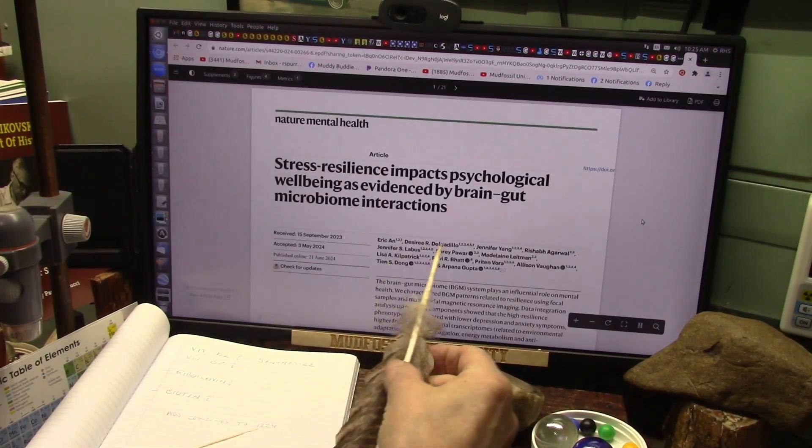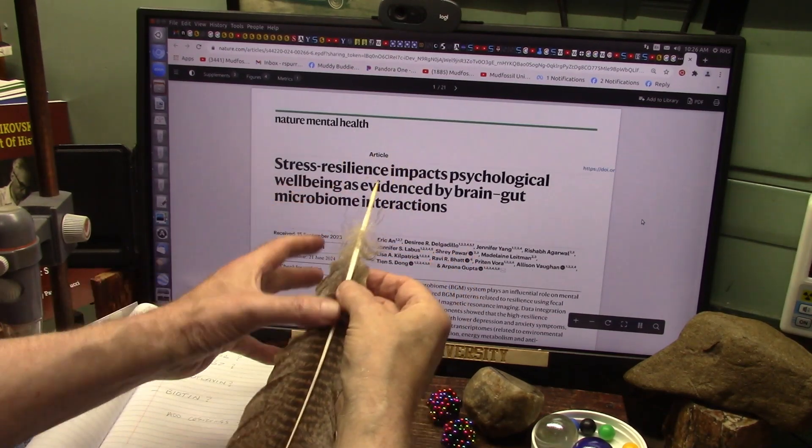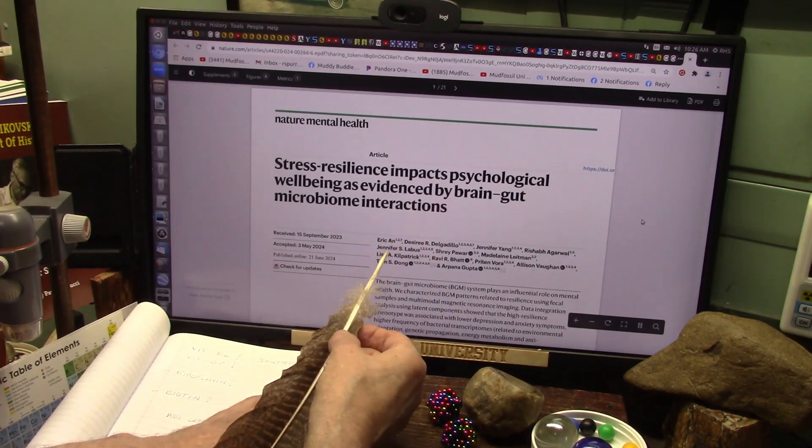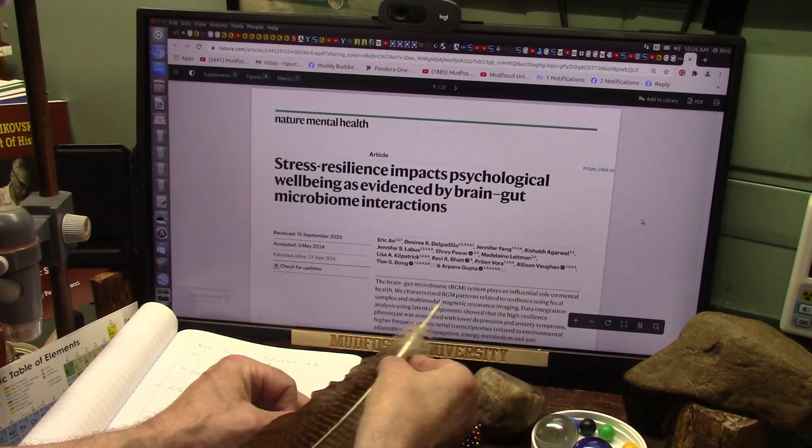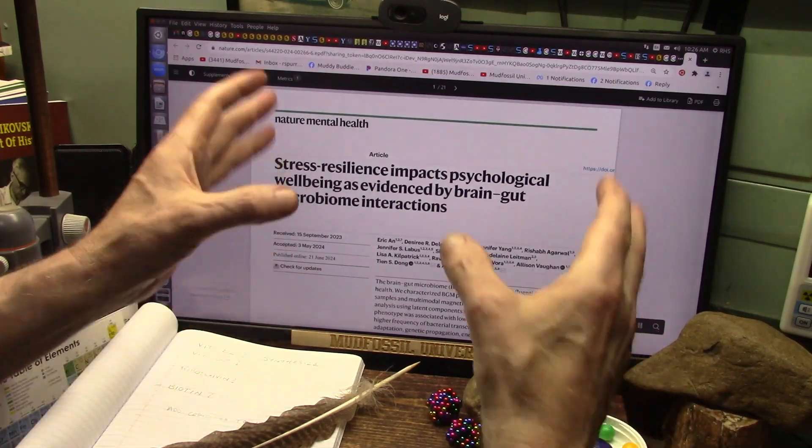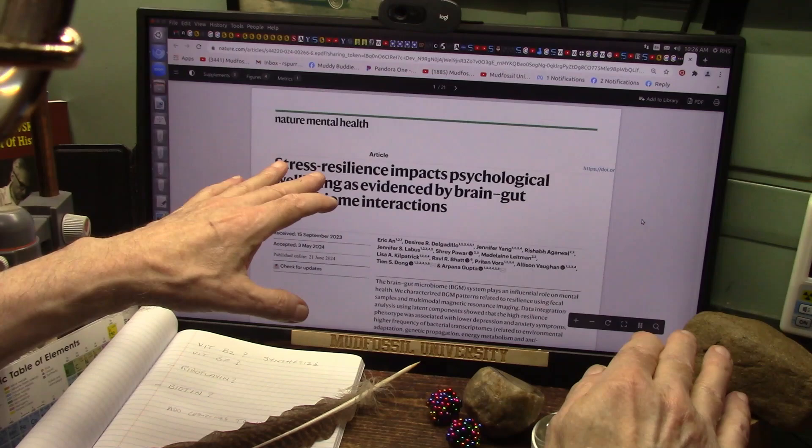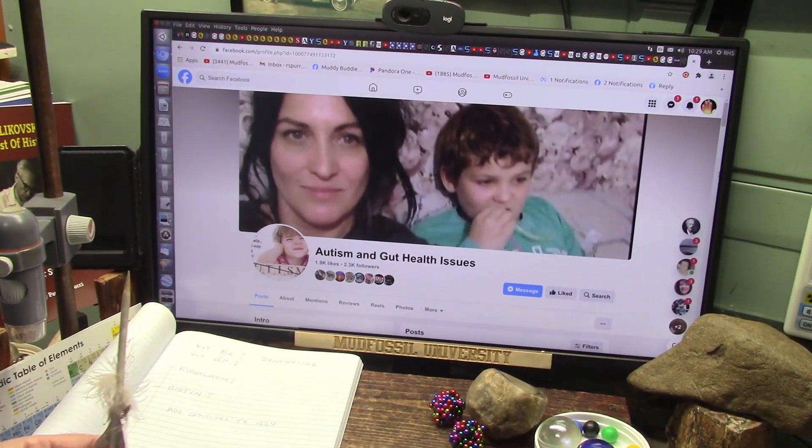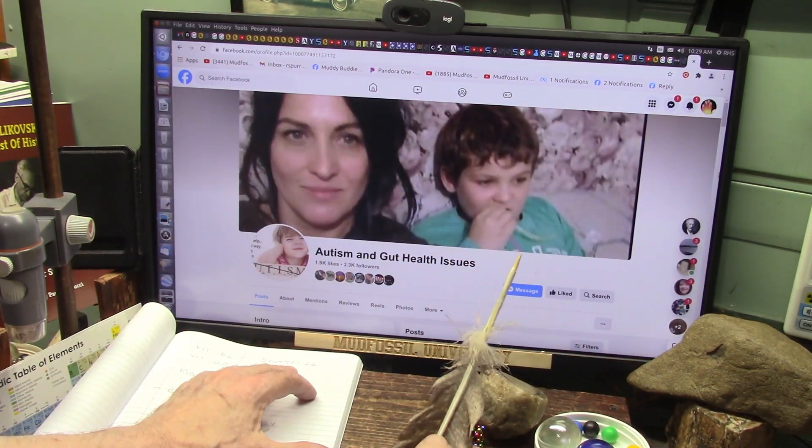Not only does it affect all kinds of things in you, it even is your well-being and how you deal with stress. This just came out a couple days ago and it's about the brain-gut microbiome plays an influential role on mental health. It's everything. It's the chemistry that makes your body run. The bacteria make the enzymes, the enzymes do the chemistry. Any link in that chain broken, you don't have the chemistry.